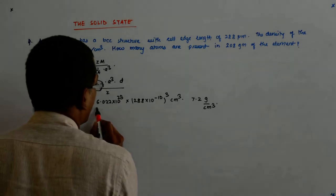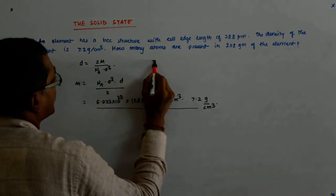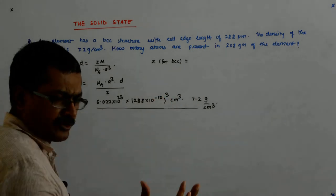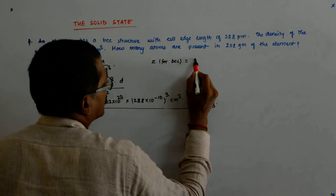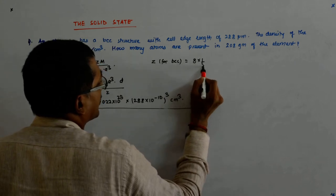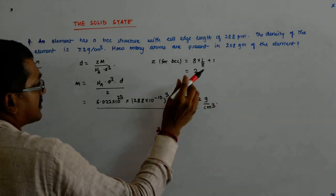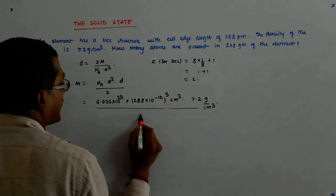That divided by z. Z is for BCC. Z for BCC is equal to, there is 1 that fully belongs to it, 8 of which 1/8 belong to it. So 8 into 1 upon 8 plus 1, so that is 2. 1 plus 1 that is 2. So that divided by 2.